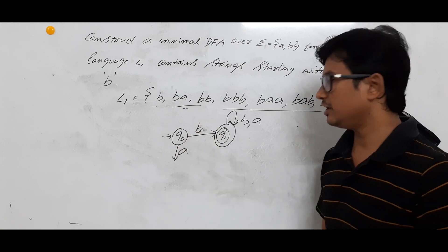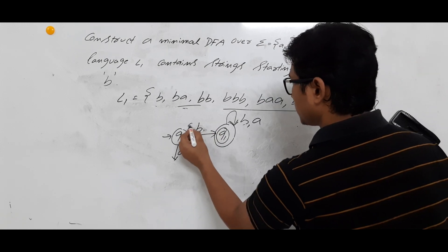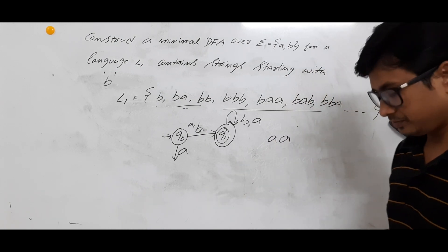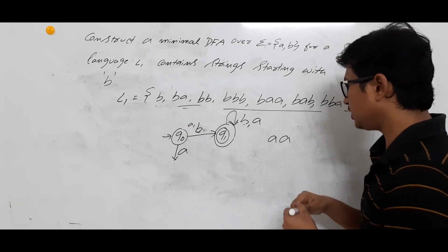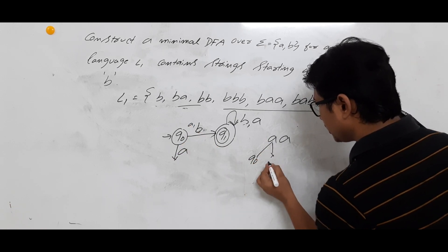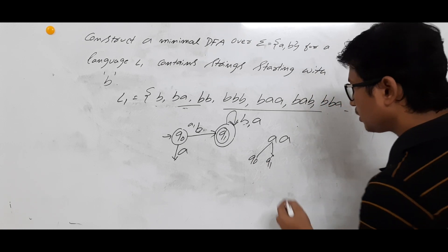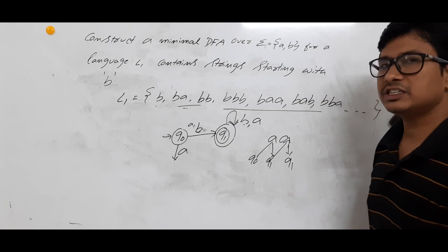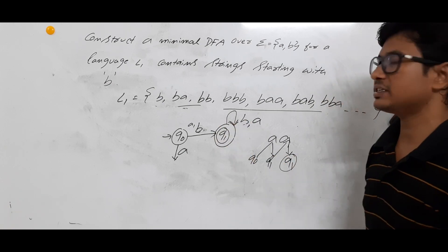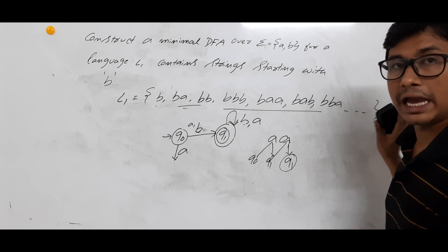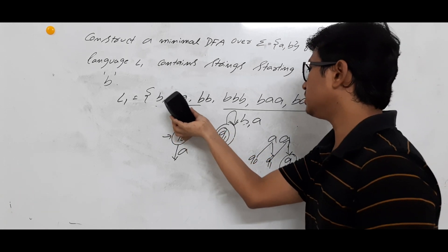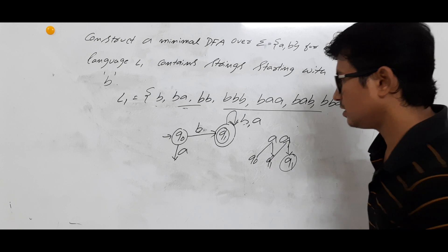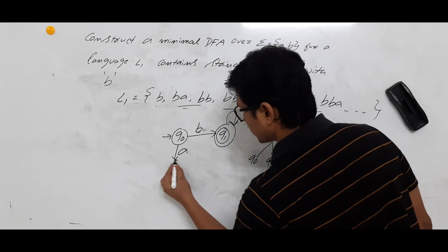If I add a transition from Q0 on A going to Q1, then strings starting with A would also reach Q1 and be accepted — but they should not be accepted. So Q0 on A cannot go to Q1. Instead, I introduce a dead state D. From Q0 on A, we go to D.